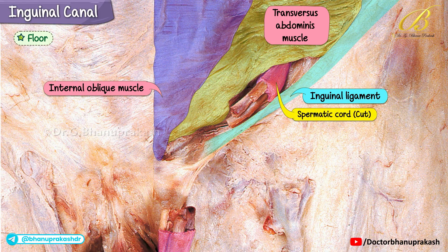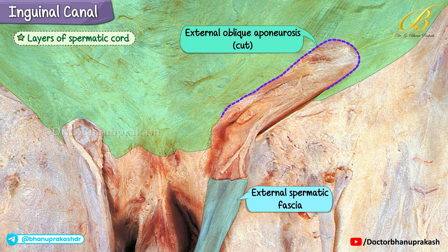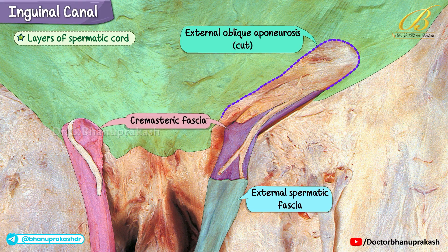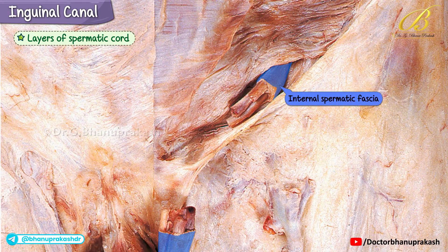The spermatic cord has been cut open to examine its layers and contents more clearly. Moving from the outside inwards: the external spermatic fascia is the outer covering, derived from the external oblique aponeurosis. The cremasteric fascia with the cremaster muscle is the middle layer, arising from the internal oblique muscle and its aponeurosis. The internal spermatic fascia is the innermost covering, derived from the transversalis fascia.